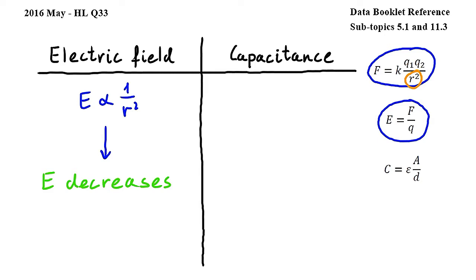Let's now examine the capacitance using this equation from subtopic 11.3 where C is capacitance, epsilon is the permittivity of the material separating the plates, A is the overlapping area of the plates and D is the distance between the plates.